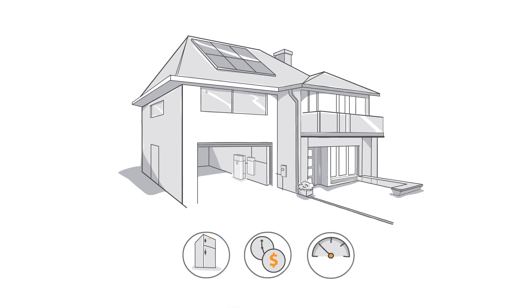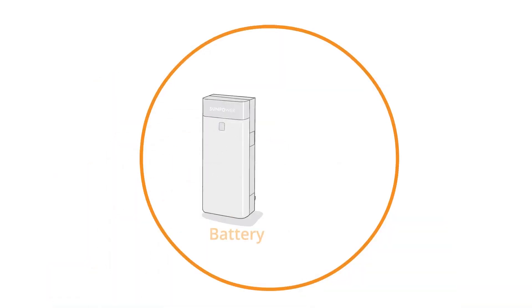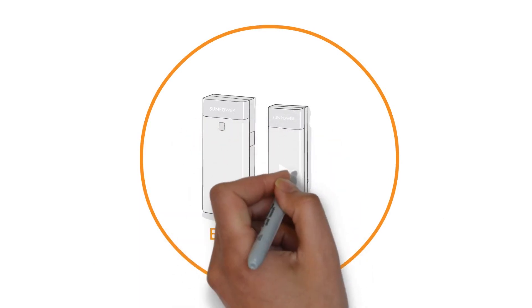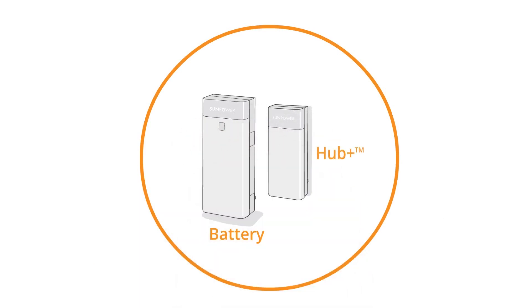SunVault Storage is made up of two elegant and compact boxes, the SunVault Battery and the Hub Plus. The SunVault Battery stores energy produced by your solar panels, while the Hub Plus controls when and how that energy is used.